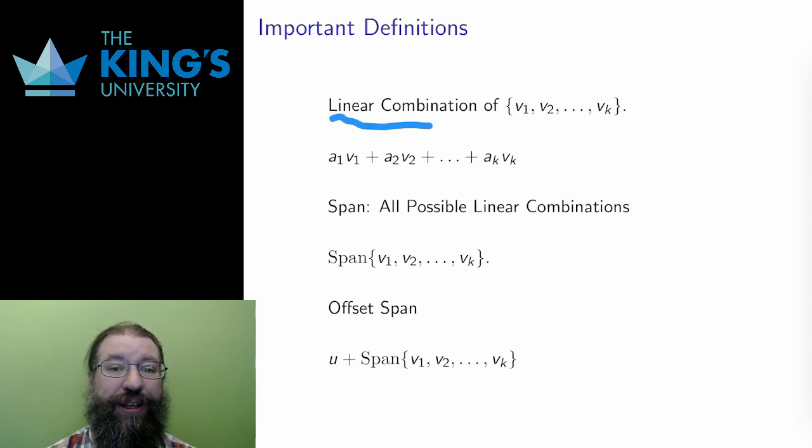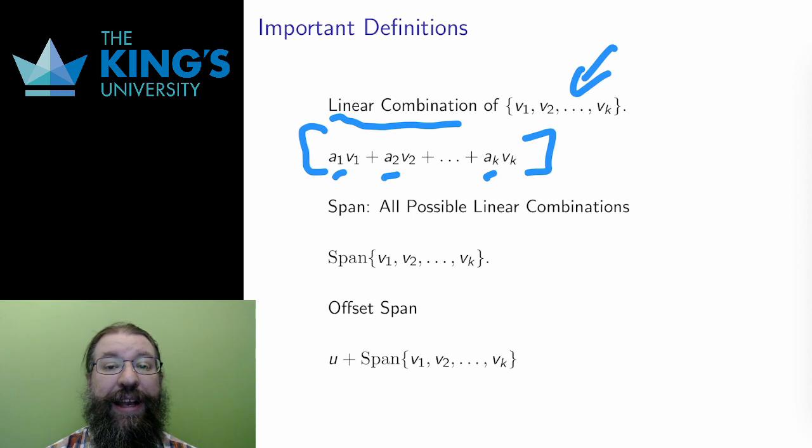First, a linear combination. Say that I have a finite set of vectors in some R^n, v1 up to vk. A linear combination of these vectors is some other vector that I can get by multiplying these vectors by constants, a1 times v1, a2 times v2, and so on, and then adding all the results up. The multiplications scale all the vectors, and then I add up all the scaled vectors, and the result is some new vector.